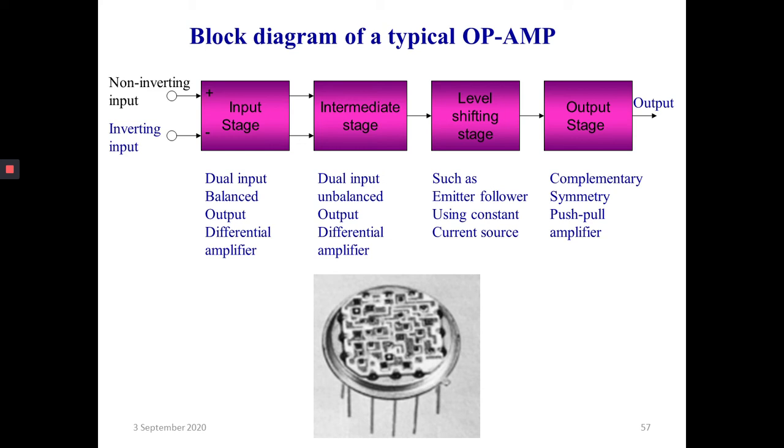The differential amplifier at this stage amplifies the difference between the two input signals at the input pins. The output will get amplified based on the difference between these two input signals. For example, if one input is five and the other is three, then the difference of two will get amplified. This is done by the input stage itself.